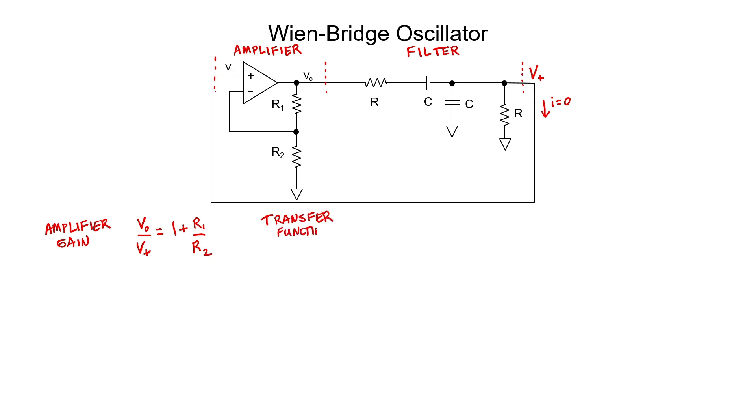Because there's no current leaving the output side, we can treat this as voltage divider. The output side is now V plus and the input side is now V naught. The resistor and capacitor are in parallel with one another, and the impedance of that capacitor is 1 over j omega c.